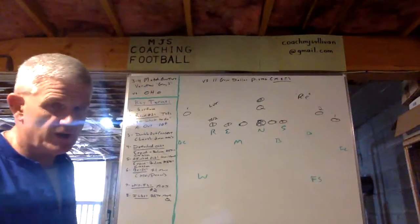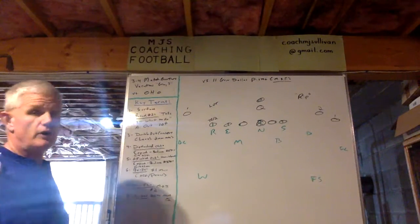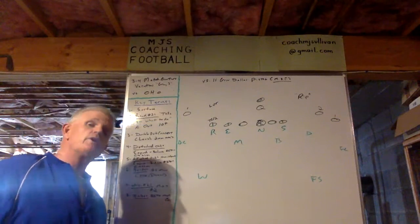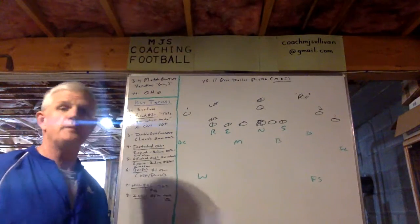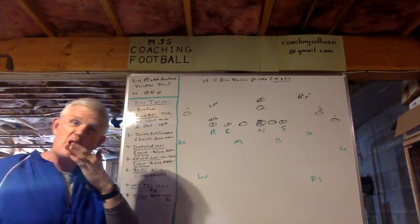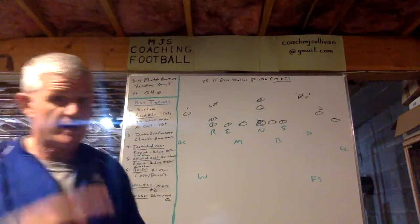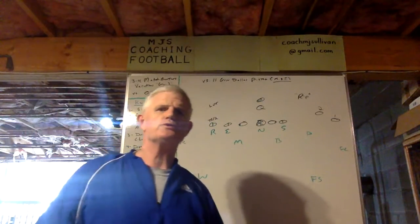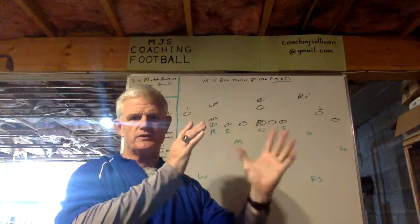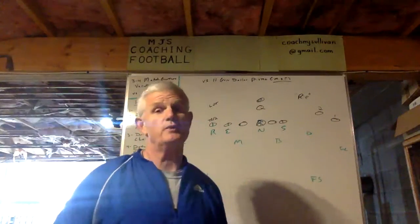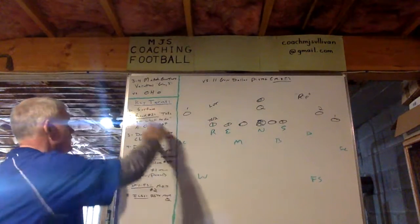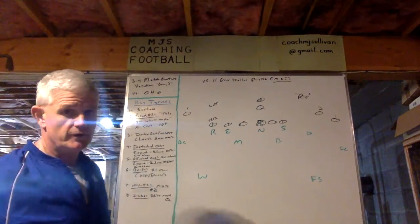In this presentation I'd like to talk to you about our match quarters variation that we call Gray Three, versus what we call Ohio Double Out concept. We use state names — that's a non-subscribers freebie — and we teach the kids how the state name correlates with the two-man route concept.